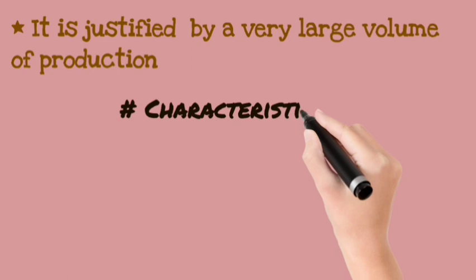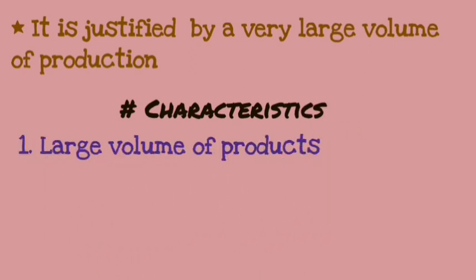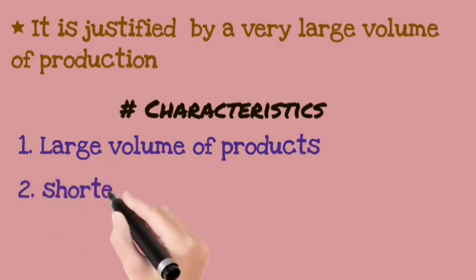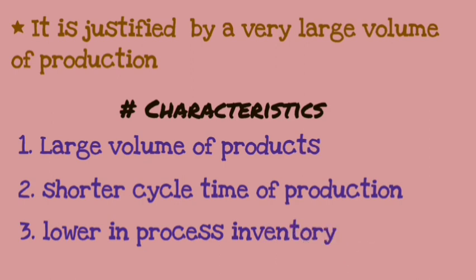Characteristics of mass production: First, the volume of product is much more. Second, the cycle time of production is much shorter — because products are made in high volumes, you don't need to spend more time per product. Third, process inventory is much less. The term inventory here covers tools, materials, and equipment involved in your process.